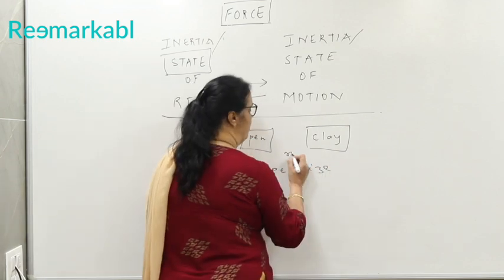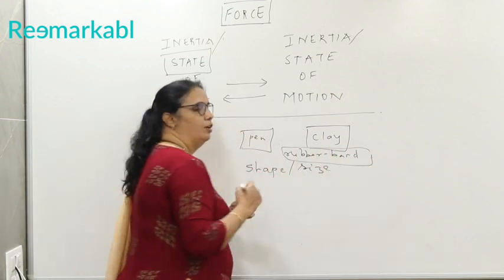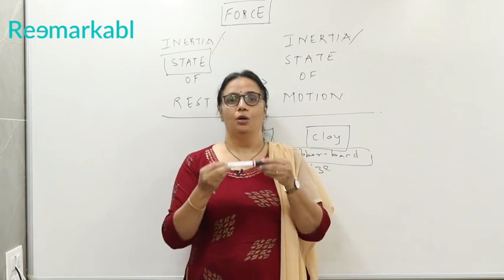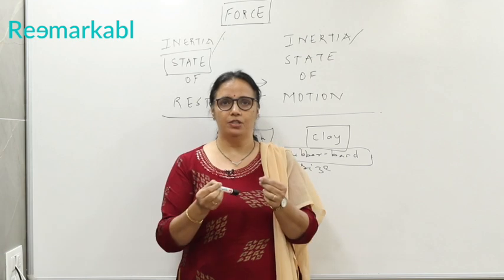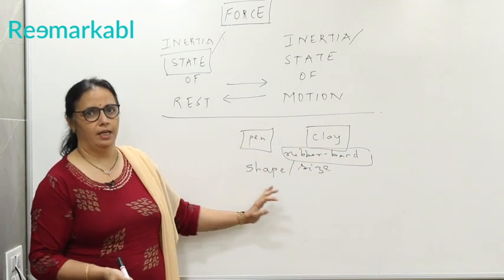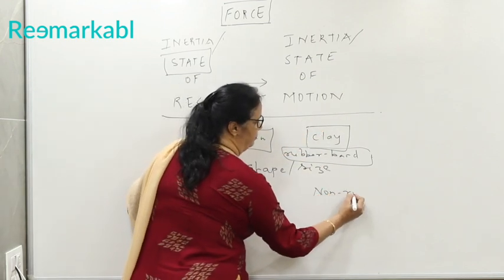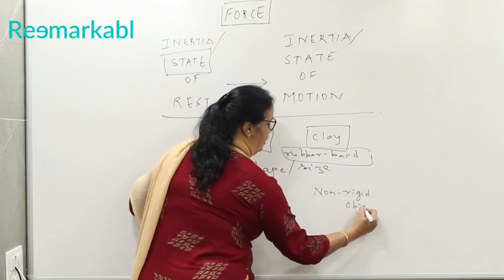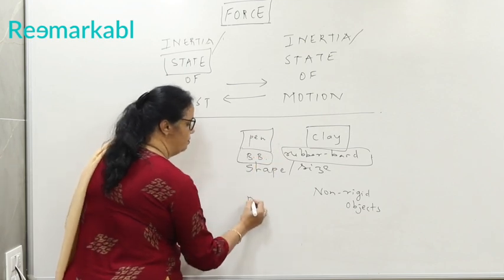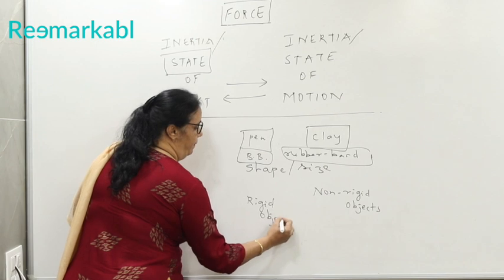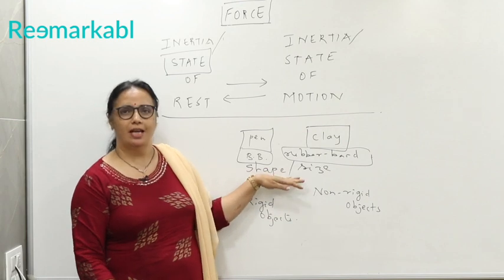Take another example, a rubber band. On applying force to a rubber band, what can be done? I can stretch it, elongate. Withdrawal of force, it comes back to its original shape and size. So we say the rubber band or clay are non-rigid objects, whereas pen or the blackboard, they fall under rigid objects. Thus, force enabled me to change in size or shape.